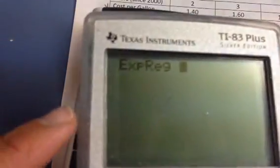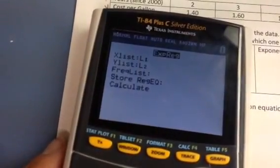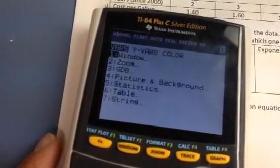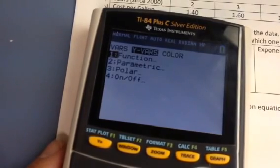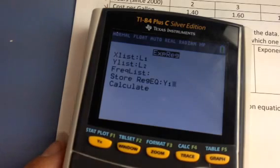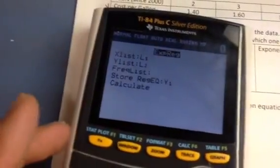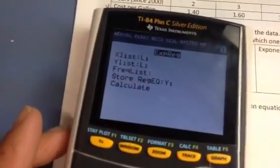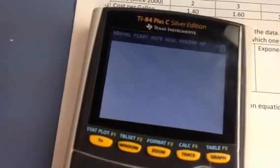If you've hit entered, then repeat this process. Stat, scroll over to calc, choose option zero. But now, whether you have this operating system or this operating system, press the vars button, scroll over to yvars, choose one for function, one for y1, and then at this point, on the older operating system, you can just hit enter. On the newer operating system, just scroll down to calculate and hit enter. And we'll get the same answer, new or old.